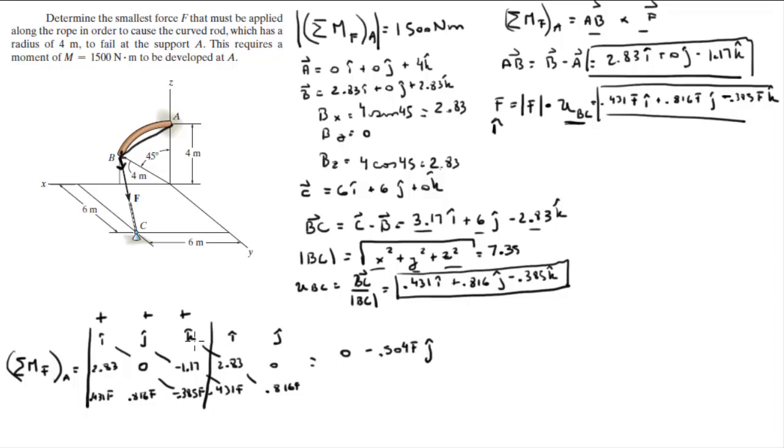So i times 0 times 0.385F is 0. j times negative 1.17 times 0.431 is negative 0.504F j. k times 2.83 times 0.816 is positive 2.31F in the k.